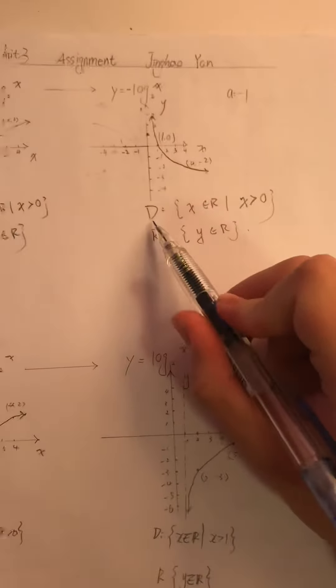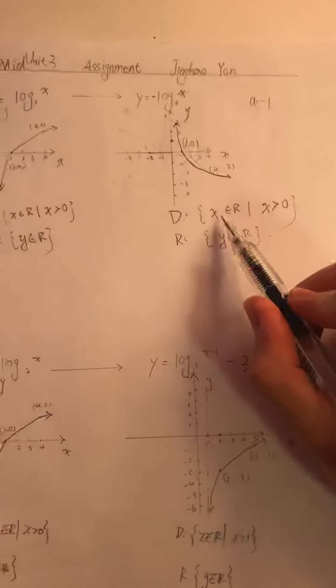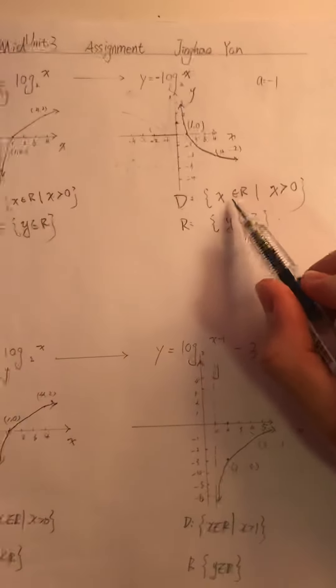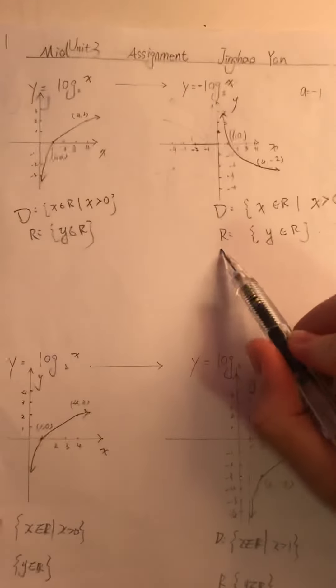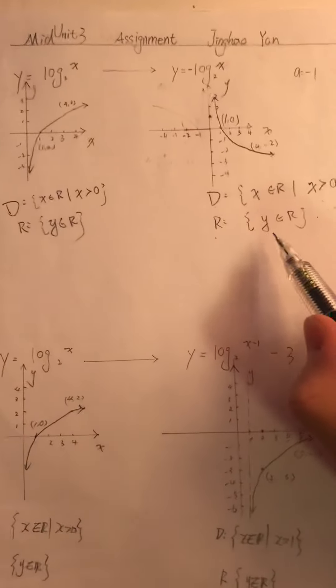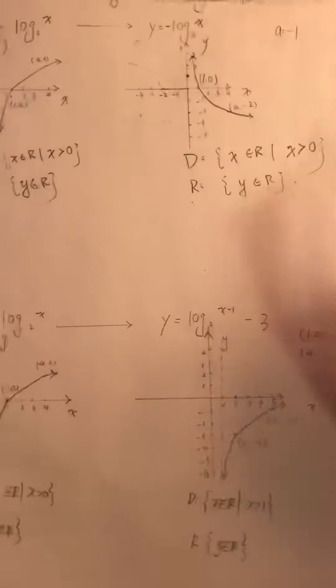The domain is still here, and it is x belongs to real numbers and greater than 0. The range doesn't change, and it is y belongs to real numbers.